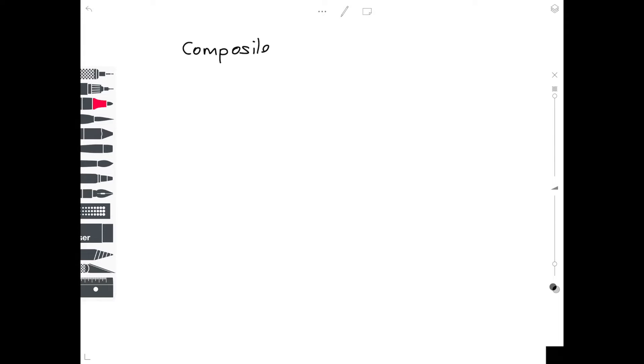So composite functions. Composite is another one of those technical words, but all it means really is that you are going to combine two functions together. So we're going to look at combining two completely separate functions, but making them into one function.